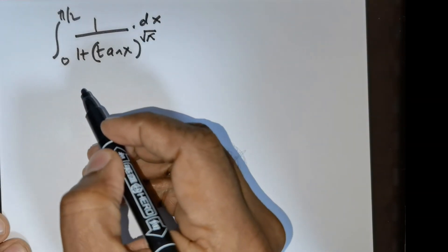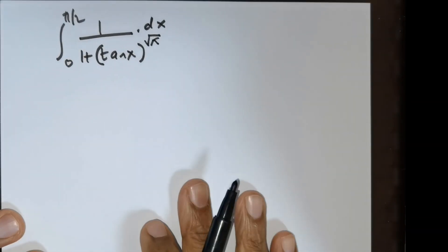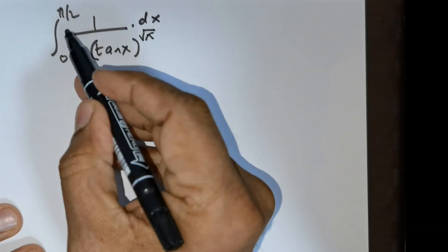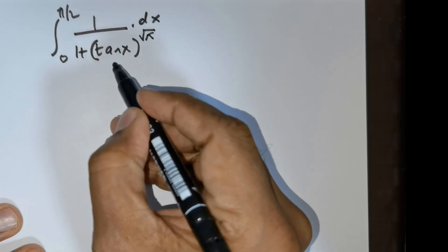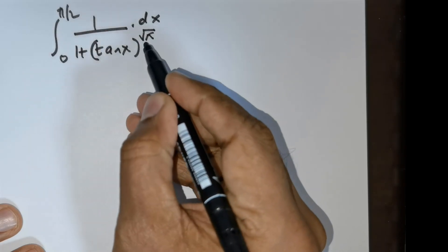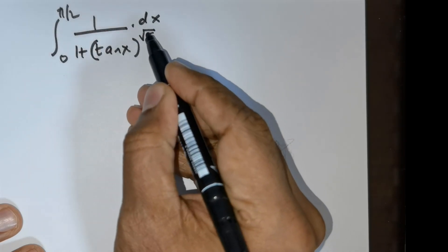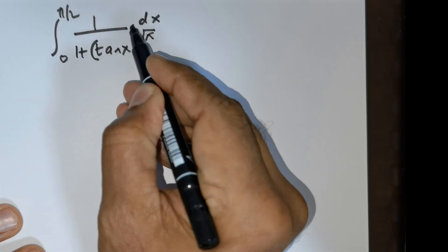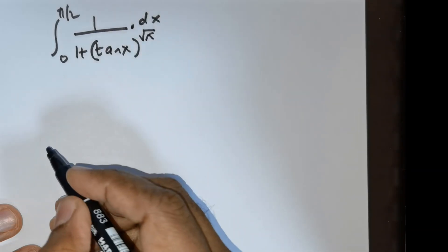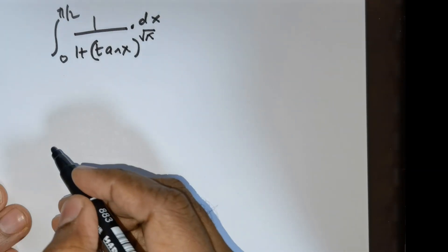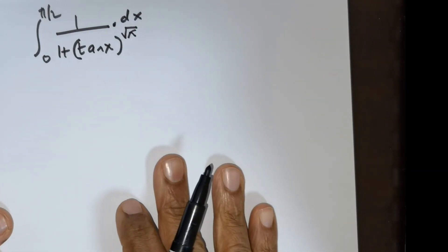Welcome students. We have an interesting question. We are expected to integrate the integral from 0 to π/2 of 1 over (1 + tan x raised to the power of root of π) dx. So we are expected to integrate this.